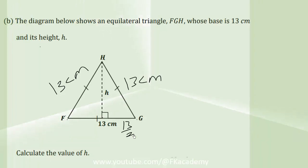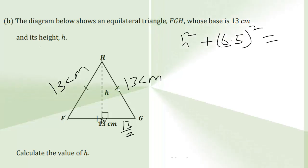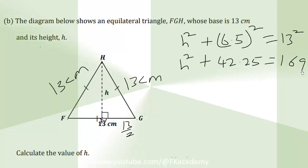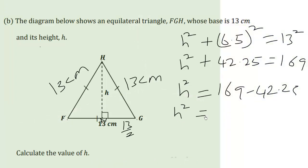Using Pythagoras theorem from triangle HNG, we get h squared plus 13 over 2, which is 6.5 squared, should equal the hypotenuse, which is 13 squared. So h squared plus 42.25 equals 169. Therefore, h squared equals 169 minus 42.25, and h squared equals 126.75.